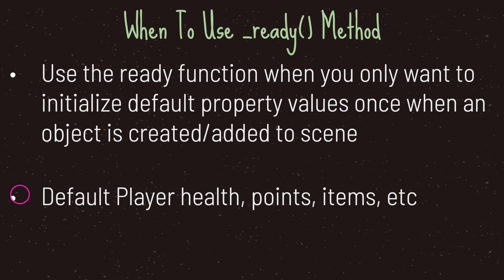If you do need to set or reset property values or call a method every time something has been deactivated and activated, you'll look into enter_tree. For deactivation, you'll look into the exit_tree virtual method — but we'll cover that in a later episode. As a beginner, you most likely won't need the enter_tree virtual method, so you should be using the ready virtual method at least 90% of the time. In the 10% of cases where you need an extra use case, go ahead and look at enter_tree.